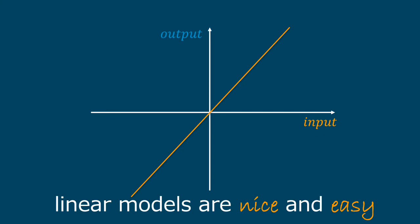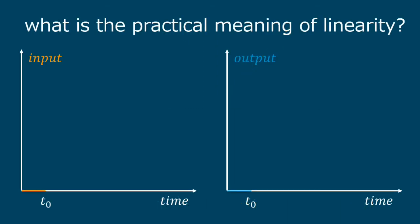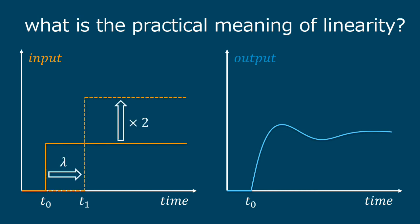An important distinction that we'll be making is about the linearity of the system, as the linear models are nice and easy. What is the practical meaning of linearity? If you excite the system with an input, you get a reaction. And now, if you delay or scale the input, your output will be delayed and scaled by the same factors.